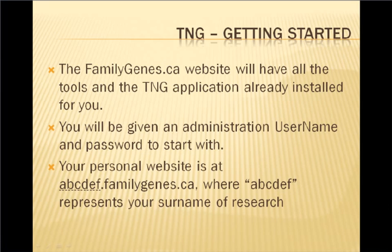You will be given an administration username and password to start with. Your personal website will be at your-prefix.familygenes.ca — the leading part, or prefix of the web URL, represents your surname of research. For example, my TNG website is weber.familygenes.ca, because I am researching my mother's family line, Weber.